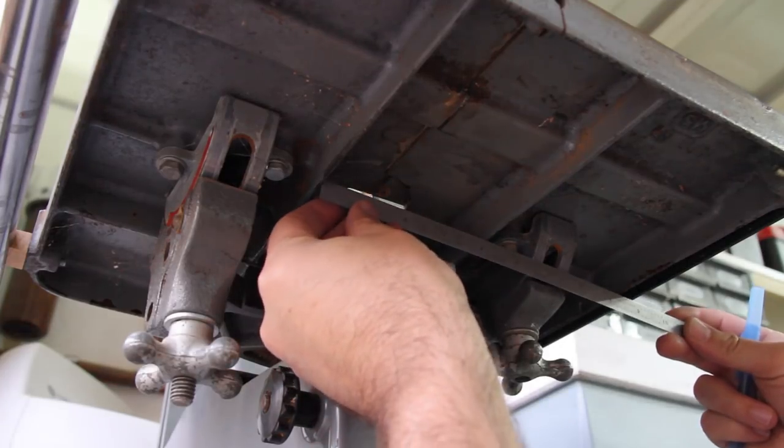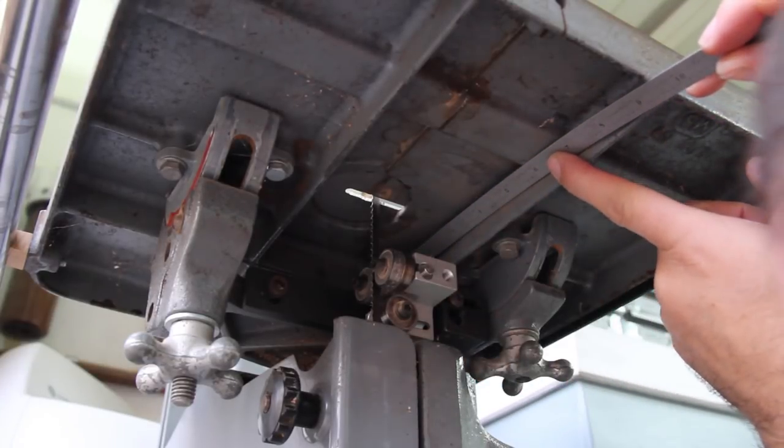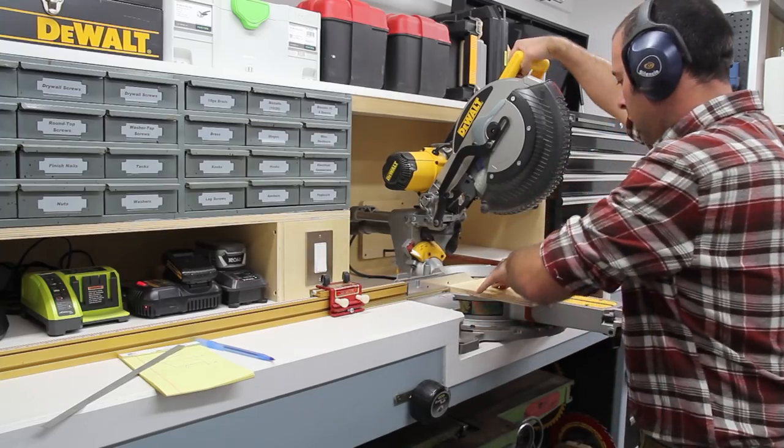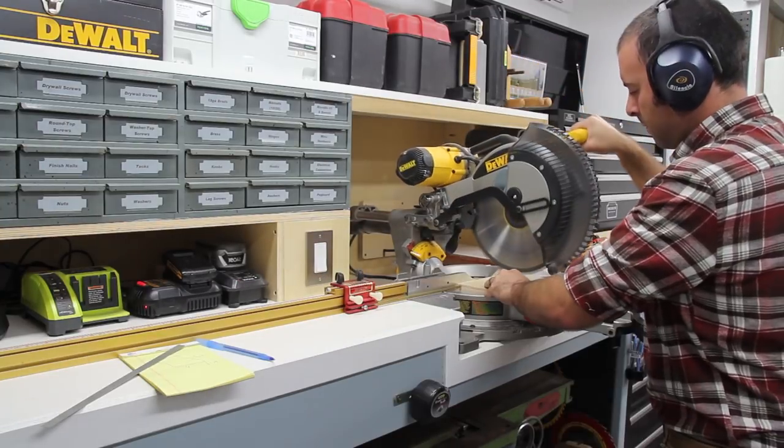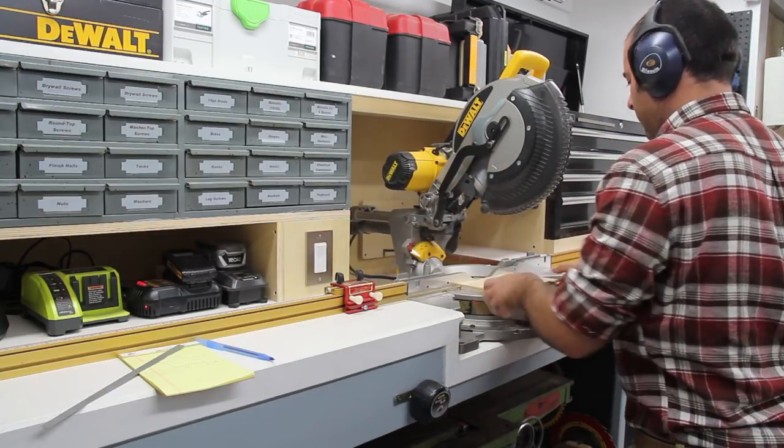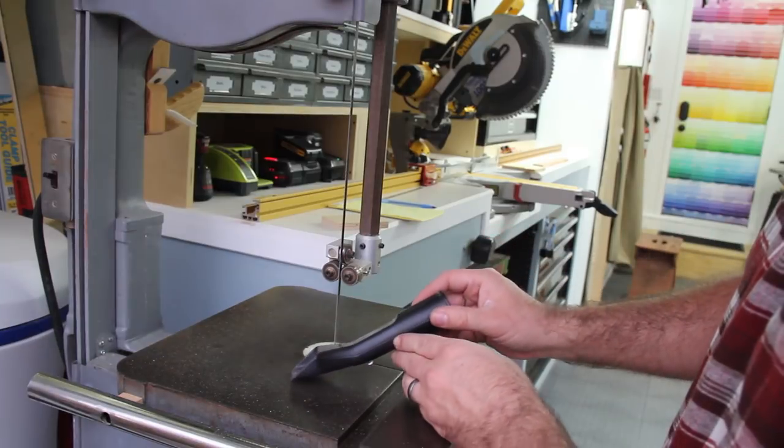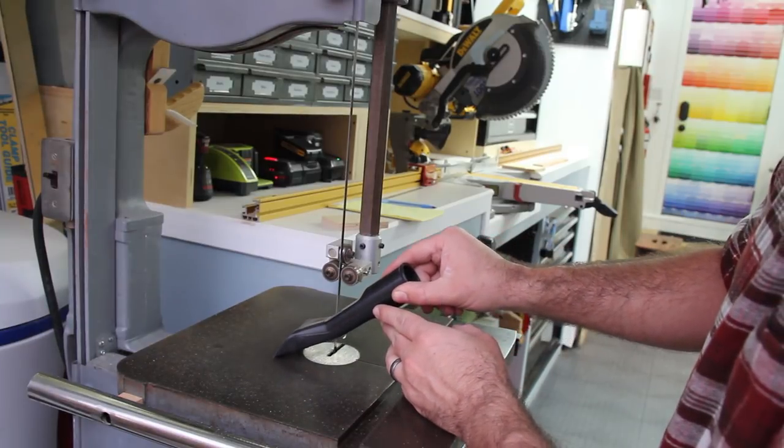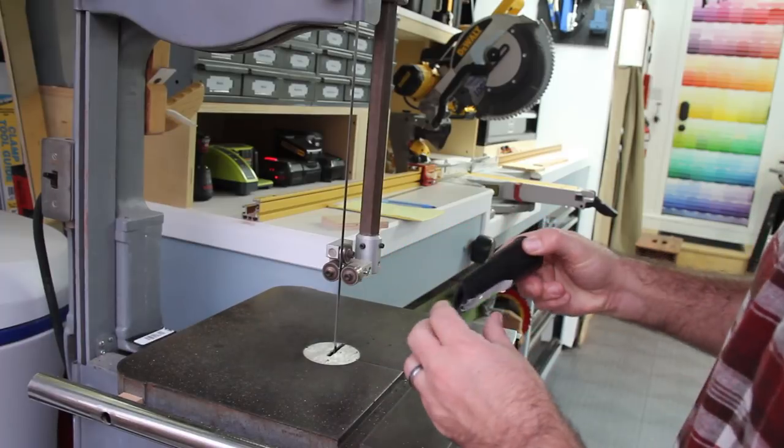I started by measuring this little flat section right under the throat plate where the blade comes through. Then I just cut a couple rectangles out of some plywood scraps. I use this cleaning attachment as a dust collection port because I already had it and I never really used it. By the way, don't ever cut a piece of wood just hovering in space like this on the bandsaw.